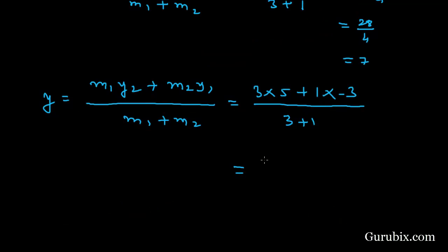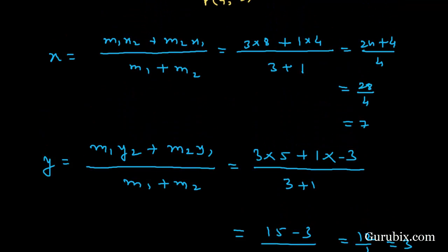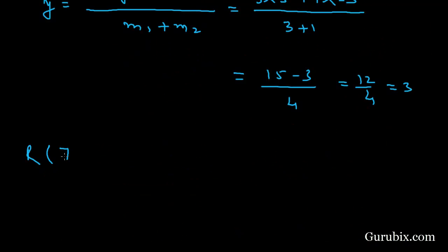This means 15 minus 3 over 4, which means 12 over 4, which means 3. Therefore, the coordinates of point R are (7, 3). So this is the solution of the question. Thank you.